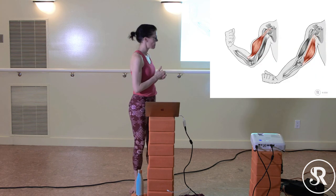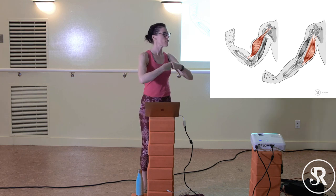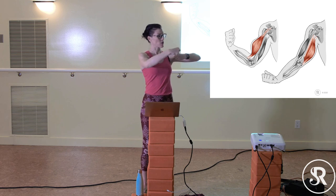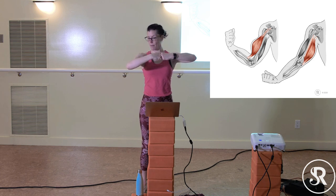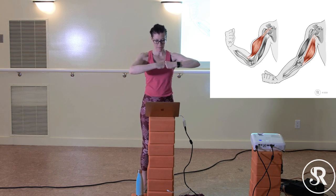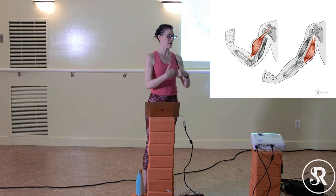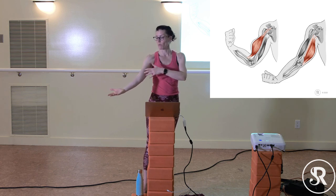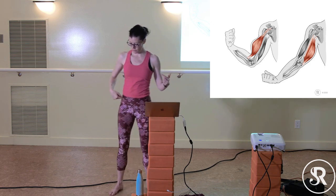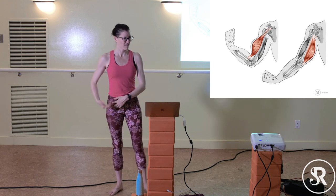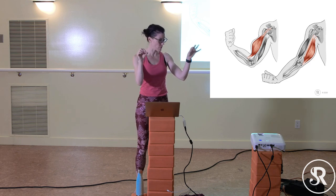Skeletal muscles have two places they insert, and all movement happens at joints. A skeletal muscle will cross at least one joint — some cross two — and influences movement at that joint by moving your bones. They attach on one end and then the other; these are sometimes called origin and insertion. Usually the origin is closer to the midline of the body.